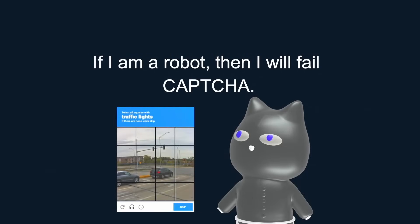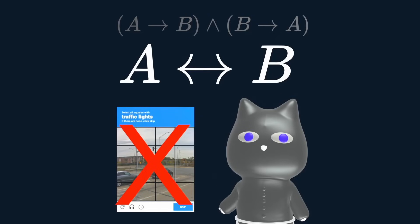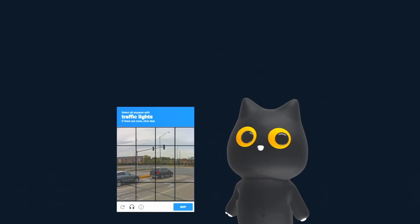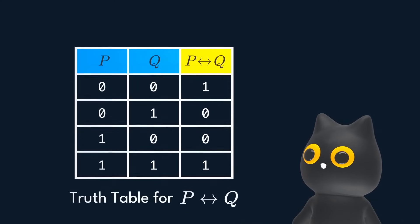Take this statement. If I am a robot, then I will fail CAPTCHA. This implication makes sense, but if I make it a bi-implication, it does not hold anymore. This is because if I fail CAPTCHA, I might not be a robot. Still unsure? Just look at the good old trusty truth table and you will be fine.